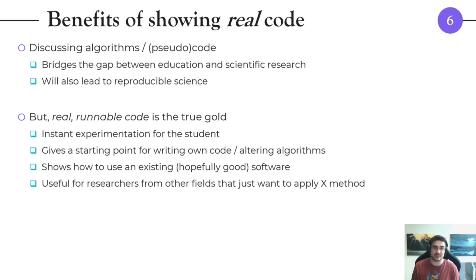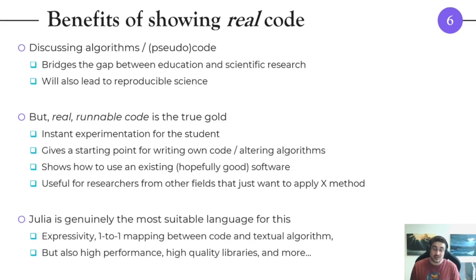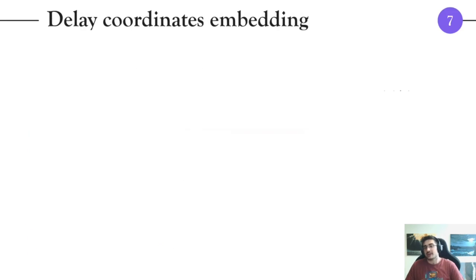I think Julia is genuinely, truthfully the most suitable language to do this in the world right now. There are many reasons for this. A large reason is the expressivity of Julia and that it allows you to have a one-to-one mapping between the code and the textual algorithm. You have all this unique beautiful stuff and the concise code, but also you have very high performance and high quality libraries. At least for the field of science I'm part of, the high performance is really really really important. In the opening slide I had an excerpt of this talk called Why Julia is the Most Suitable Language for Science, and there in this presentation I delved much deeper into why I believe this is true. I don't want to repeat myself more here but this really is pretty much the summary.